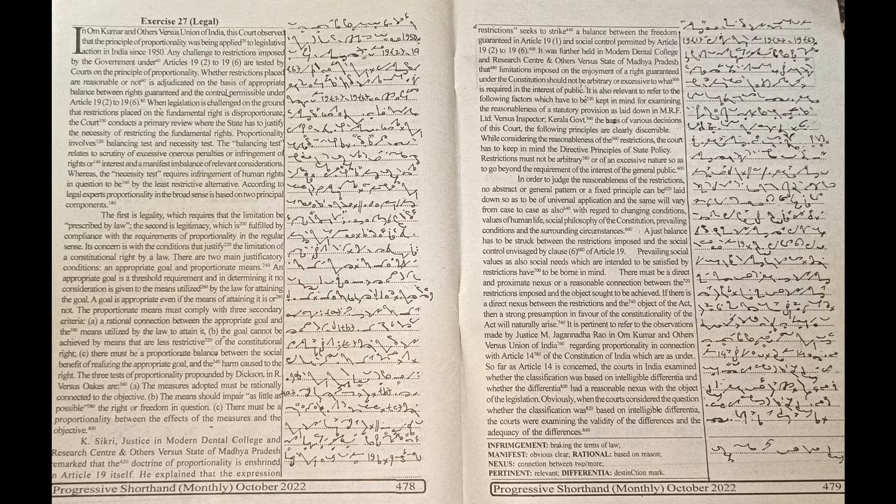B: The goal cannot be achieved by means that are less restrictive of the constitutional right. C: There must be a proportionate balance between the social benefit of realizing the appropriate goal and the harm caused to the right.